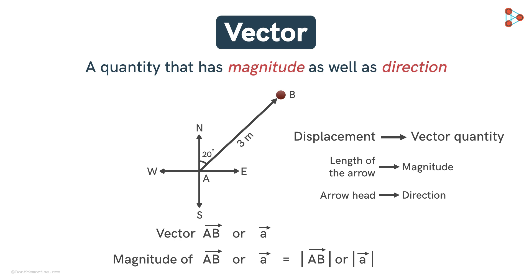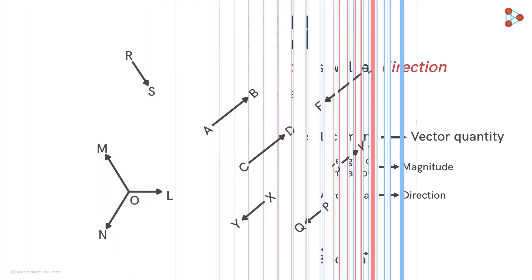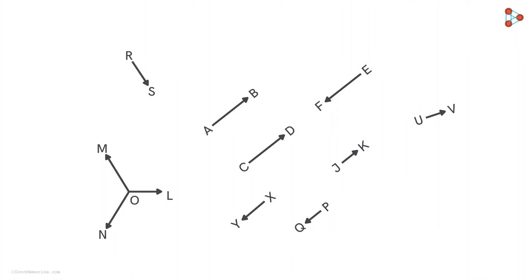So we see that we can represent a vector in general by an arrow. Now here are a few vectors on the screen with different magnitudes and directions. Notice that these vectors are parallel to each other, while these vectors have a common initial point.